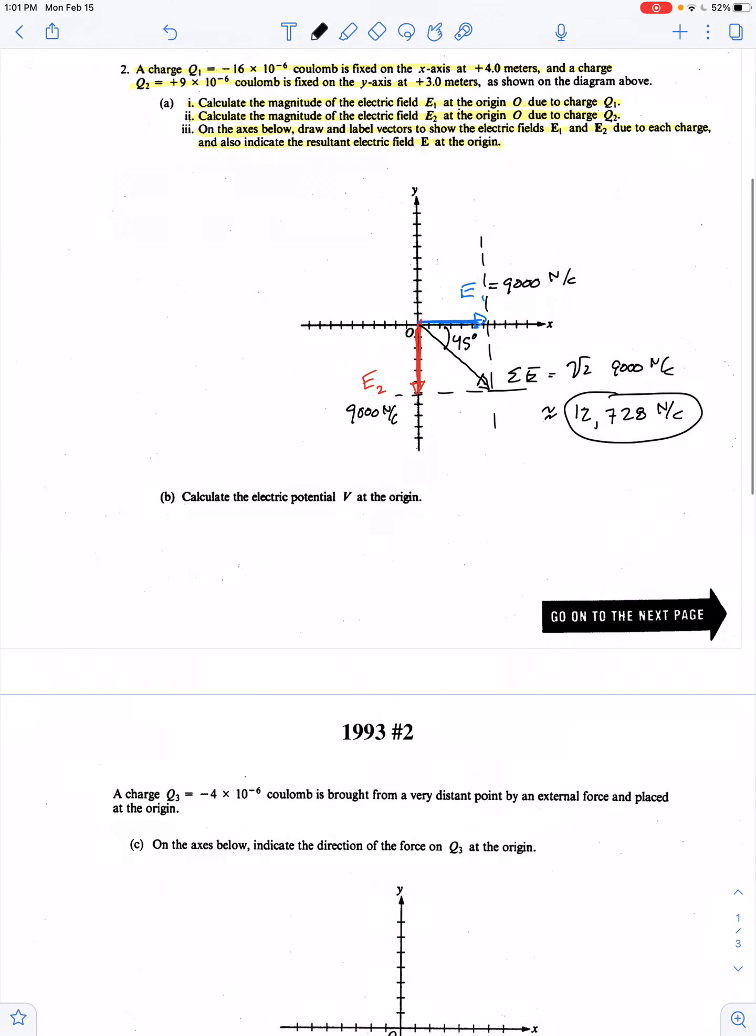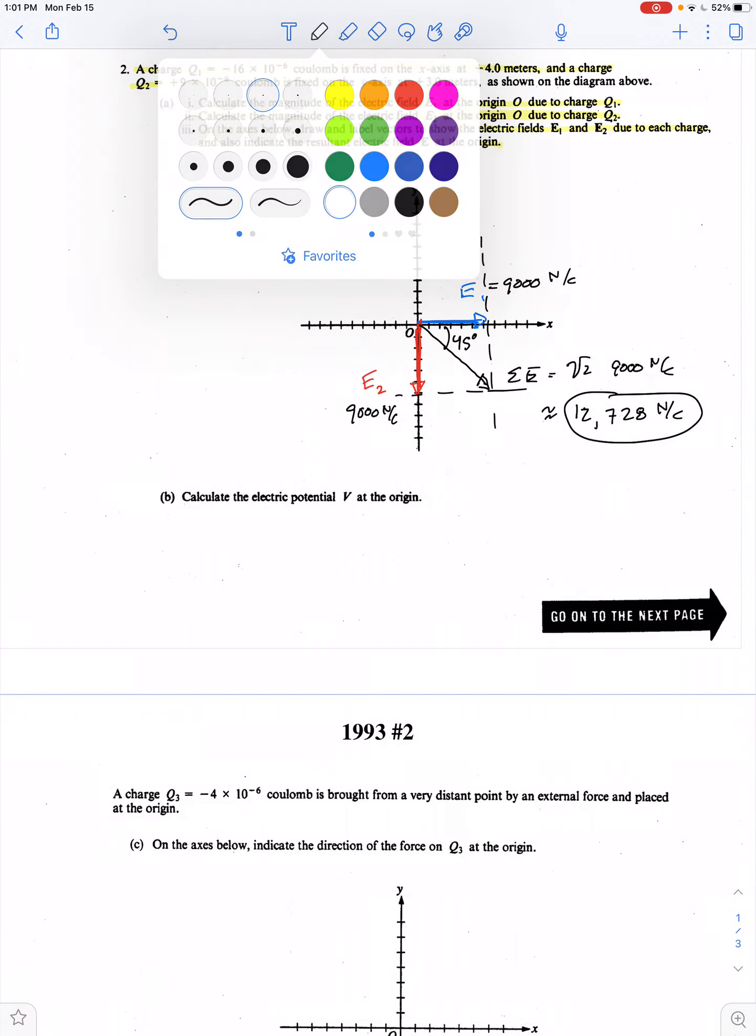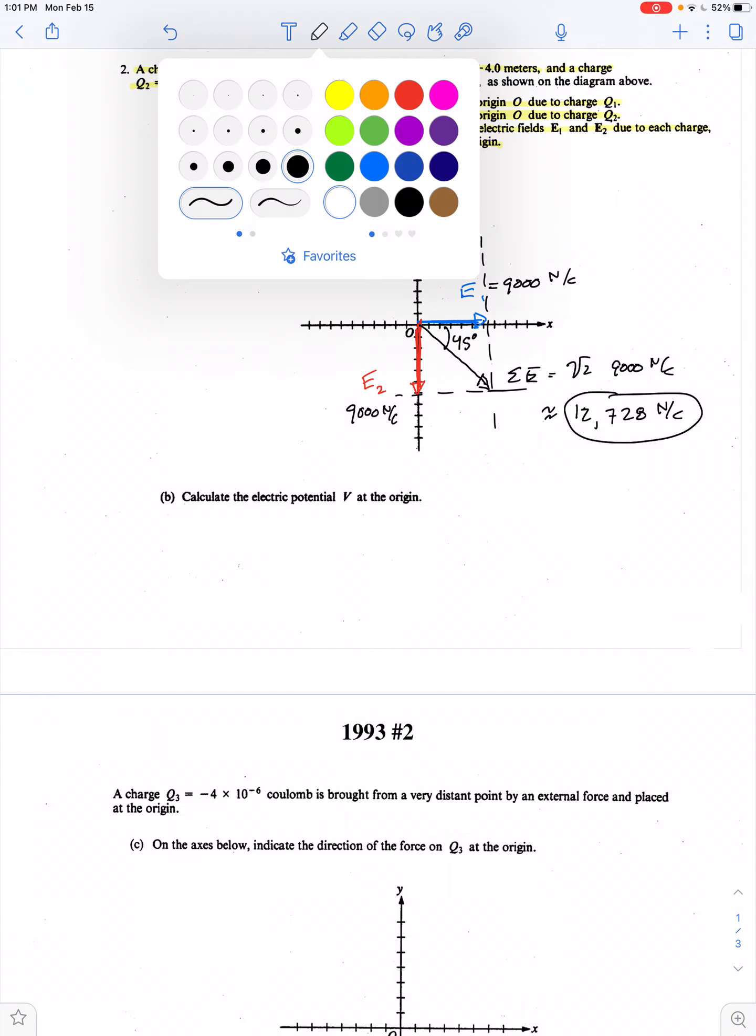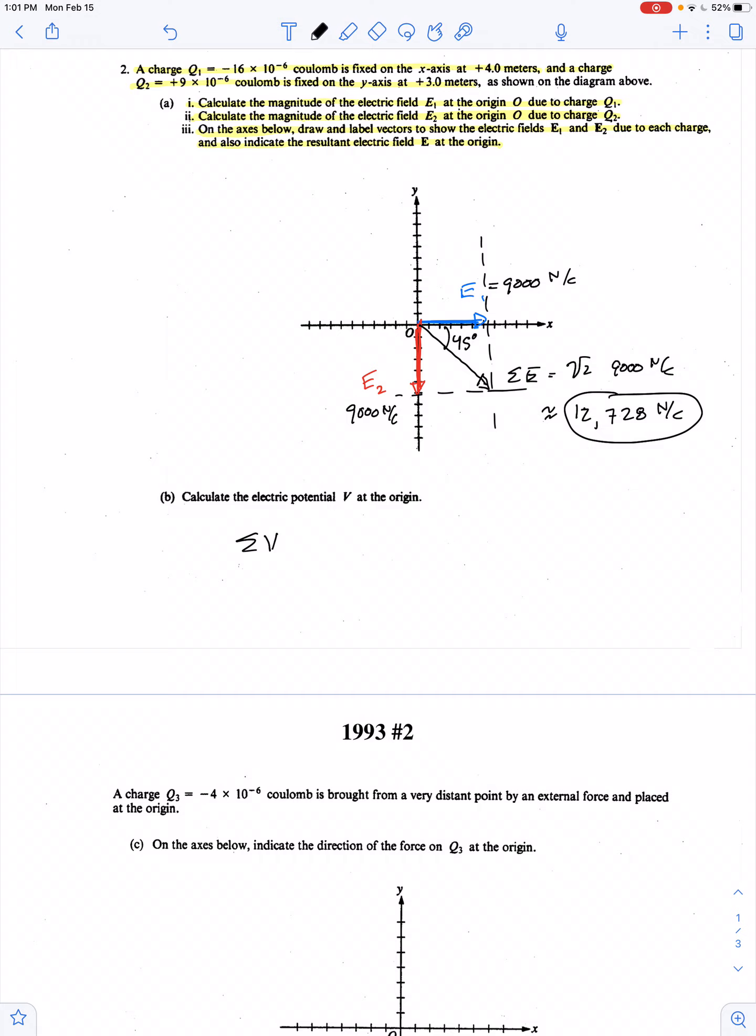Calculate the electric potential at the origin. Well, that's always easier than calculating electric field because we don't have to do any vector math. So the net electric potential at the origin is KQ1 over X plus KQ2 over Y. This is 9 times 10 to the 9th times negative 16 times 10 to the negative 6 over 4 plus positive 9 times 10 to the negative 6 over 3.